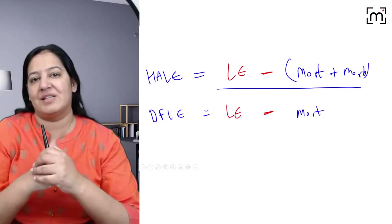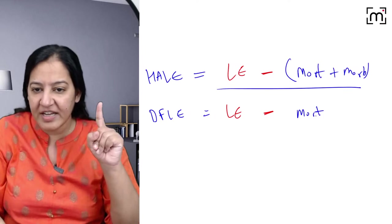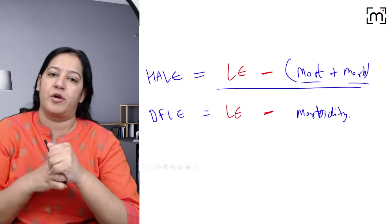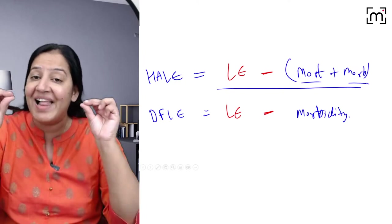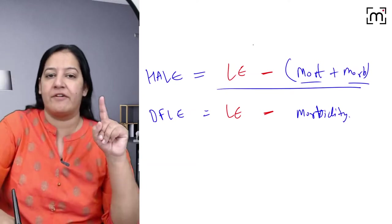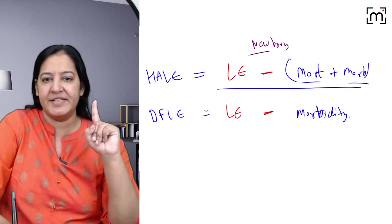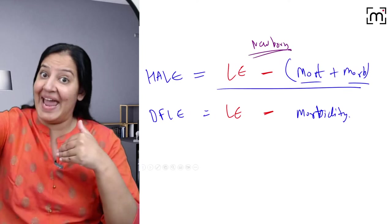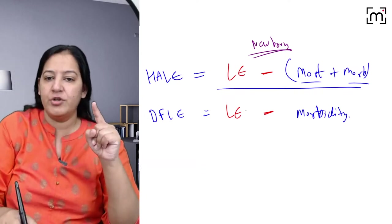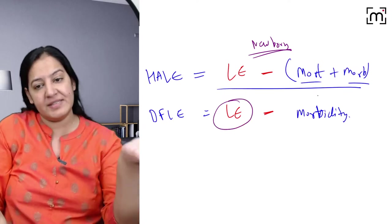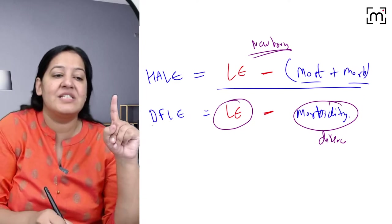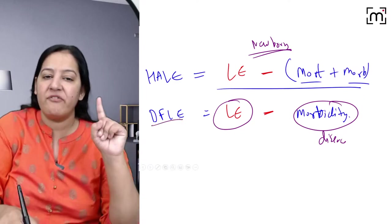Here is the key difference: in DFLE we take life expectancy but subtract only morbidity, not mortality. In HALE, we take life expectancy but subtract both mortality and morbidity. So how many healthy years will a newborn survive? You deduce from total life expectancy the morbid years — remaining life is healthy — that is DFLE or Sullivan Index. But if you deduce both morbidity and mortality, that is HALE.